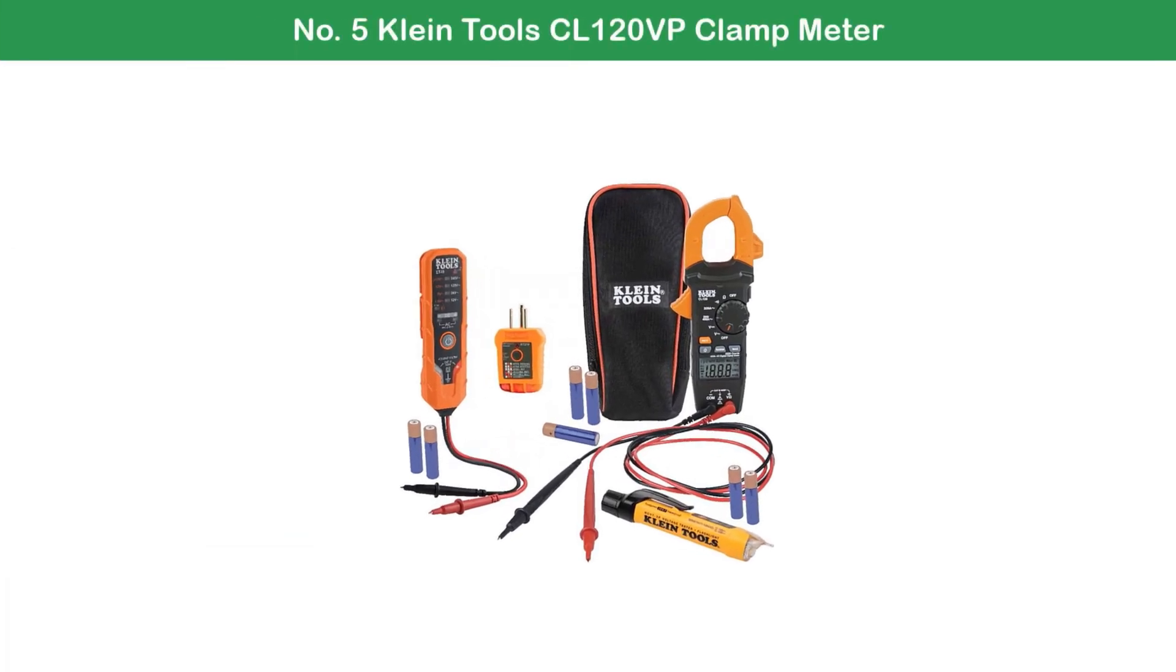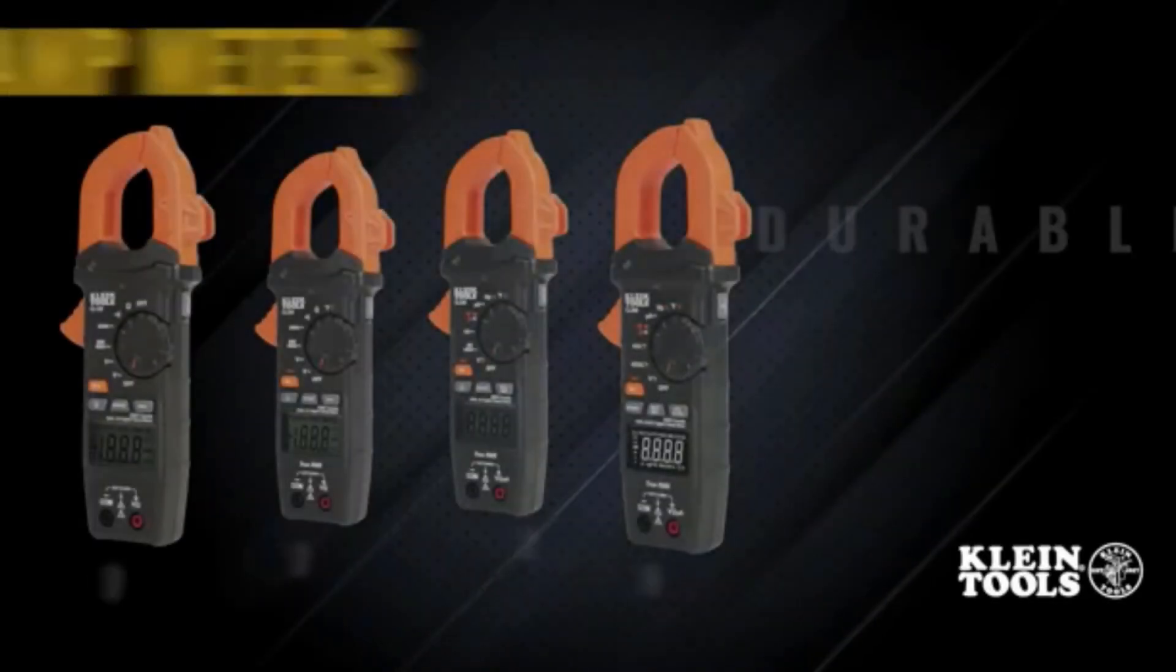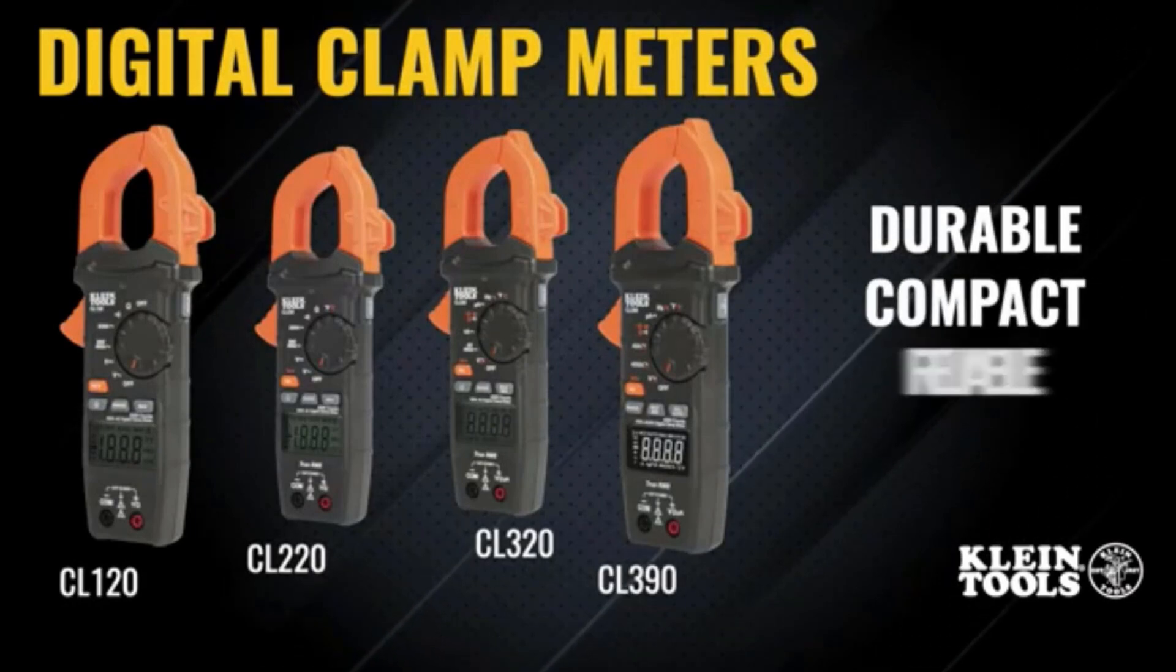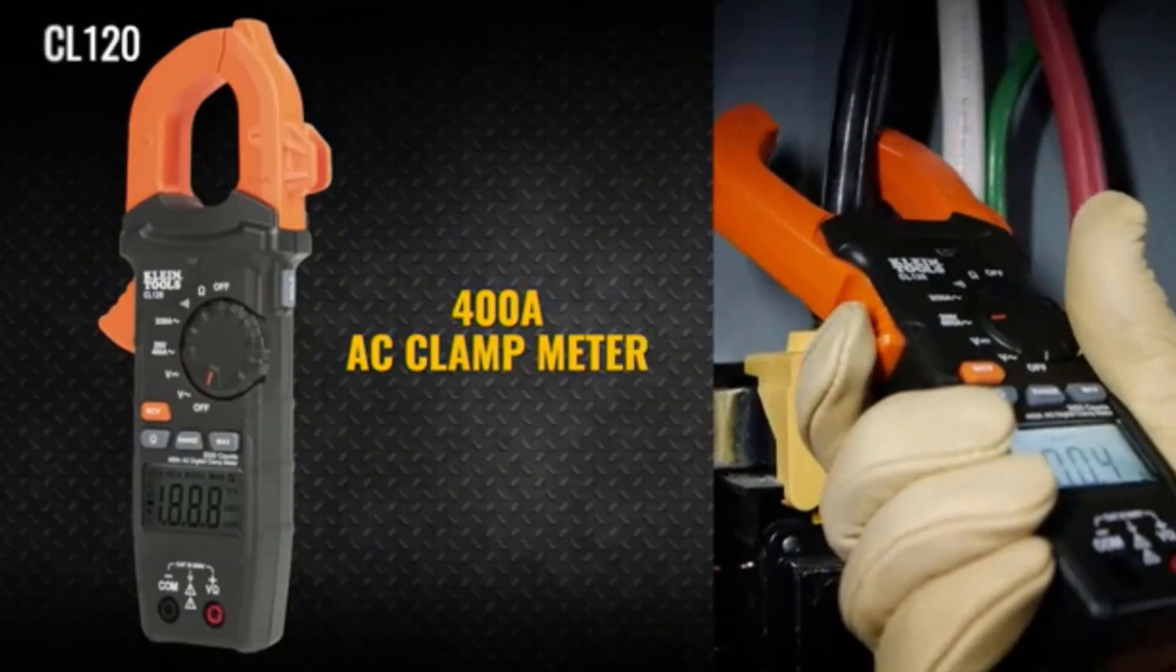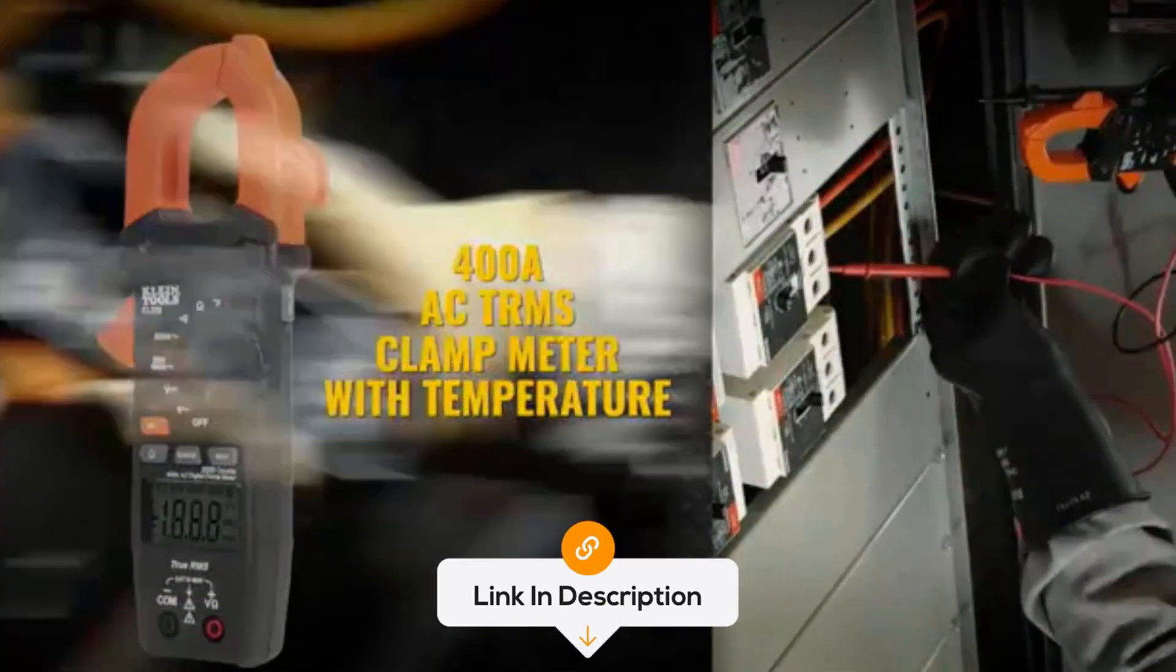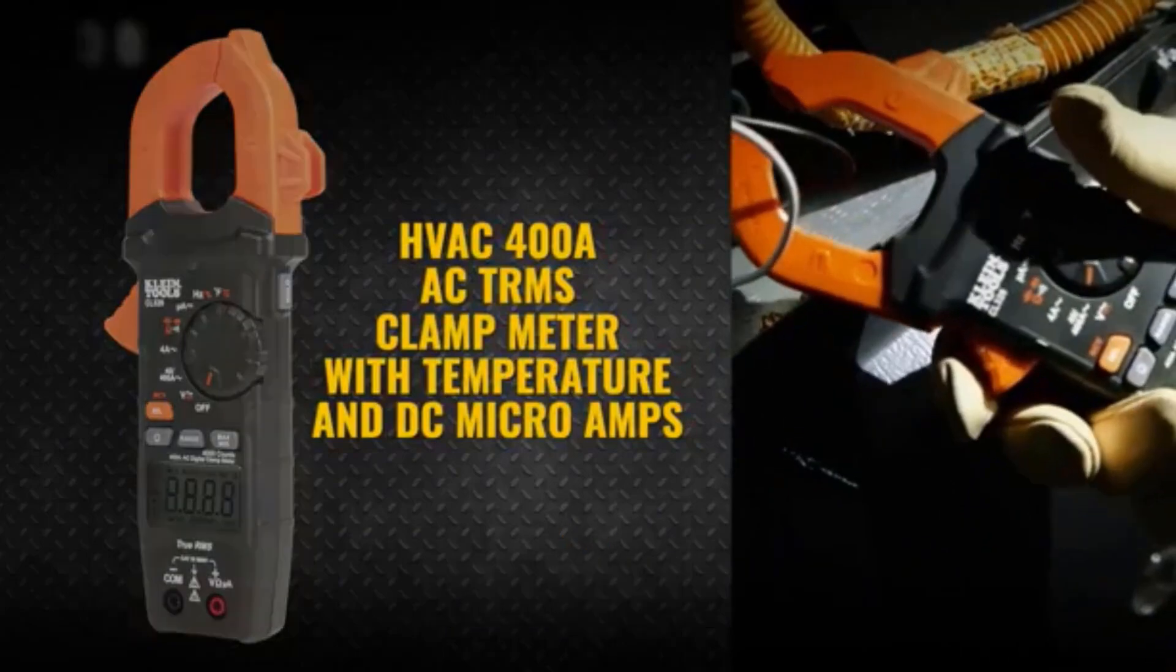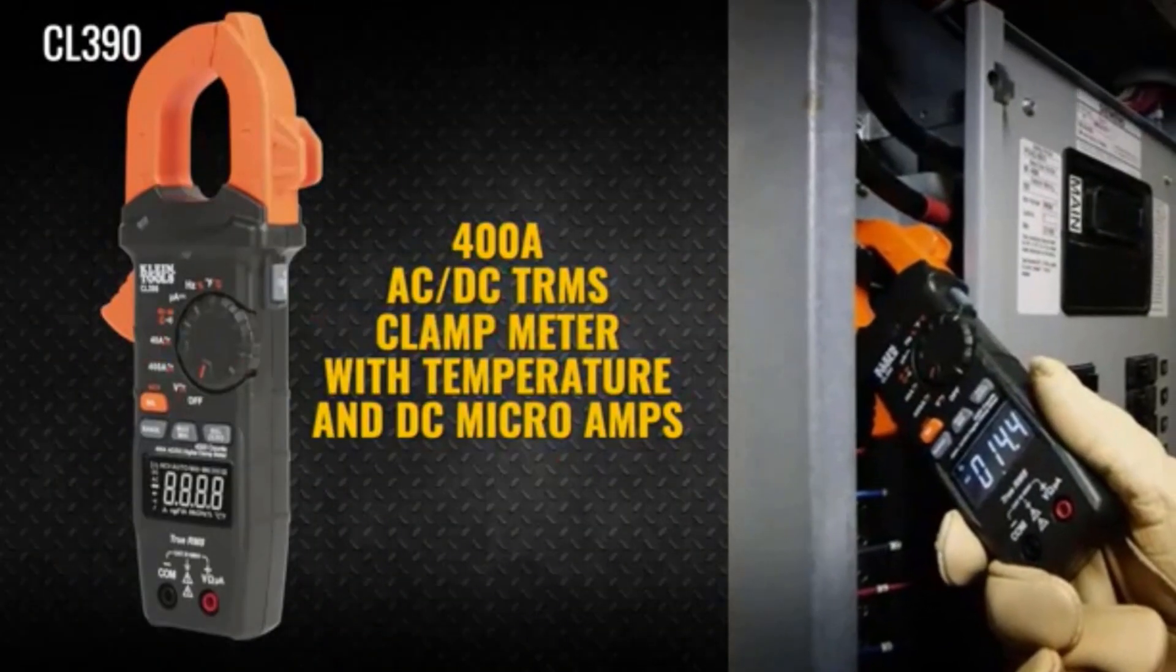Number 5: Klein Tools CL120VP Clamp Meter. The Klein Tools CL120VP Clamp Meter is a reliable, versatile tool for both professionals and DIY enthusiasts, making it a standout option among the best clamp meters. Designed for convenience and accuracy, this meter combines essential features with Klein's trusted durability.